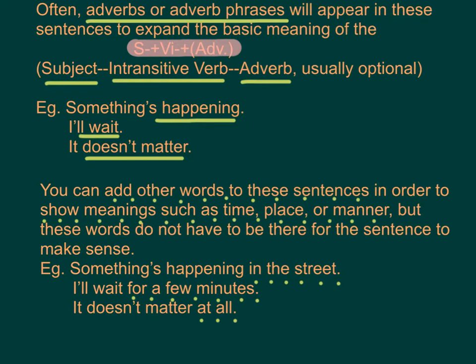For example: 'Something's happening. I'll wait. It doesn't matter.' You can add other words to these sentences to show meanings such as time, place, or manner, but these words do not have to be there for the sentence to make sense. For example: 'Something's happening in the street. I'll wait for a few minutes. It doesn't matter at all.'